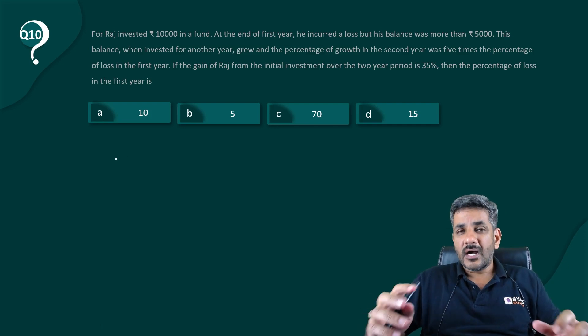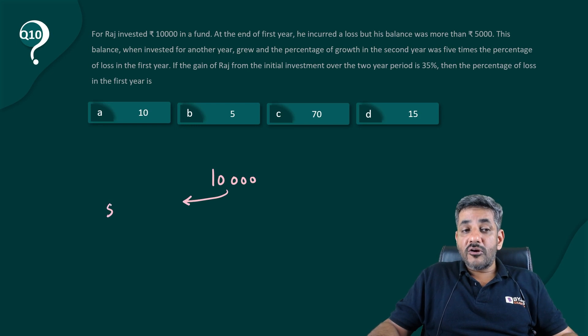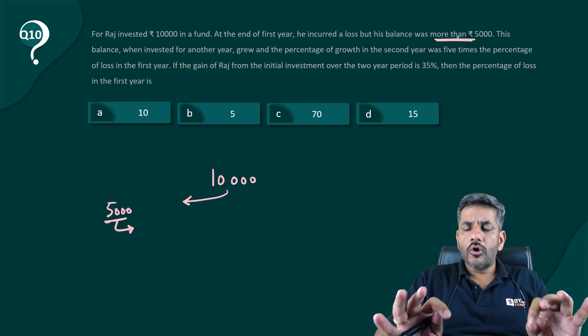This is what I do, I try to visualize these problems. So 10,000 is the initial investment, right? In the first year you have a loss, so my money decreased but it did not go below 5000. It's definitely above that, it's clearly written his balance was more than 5000.